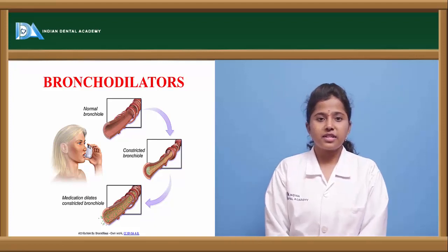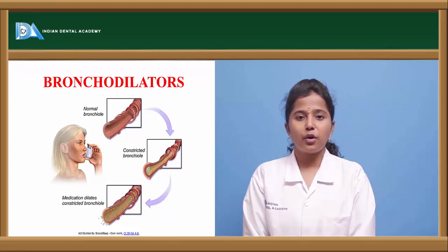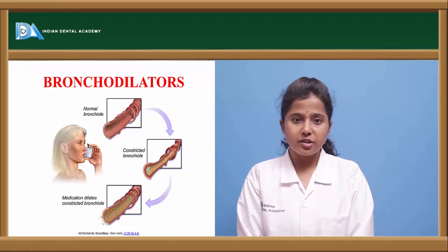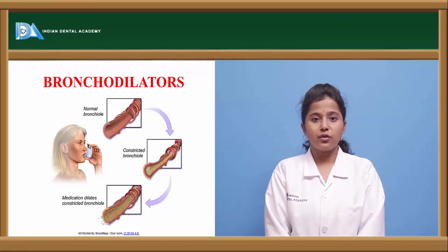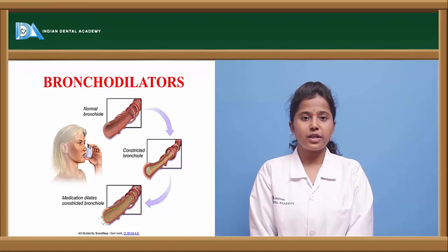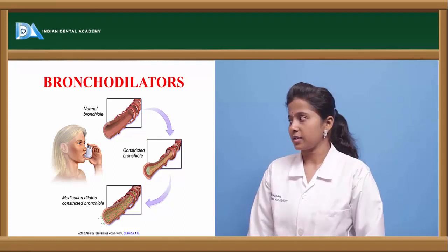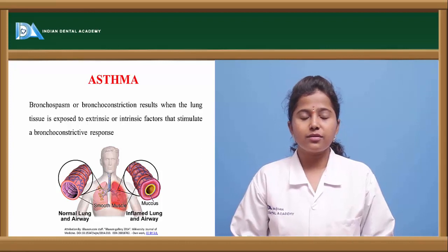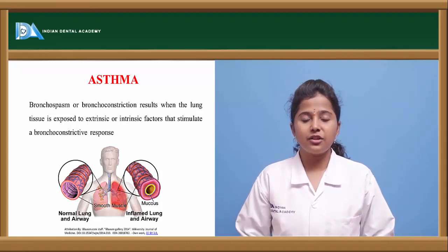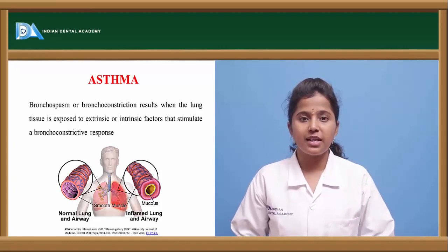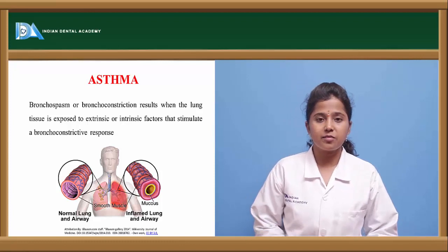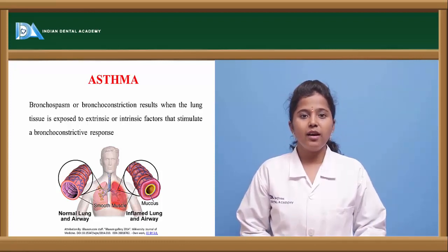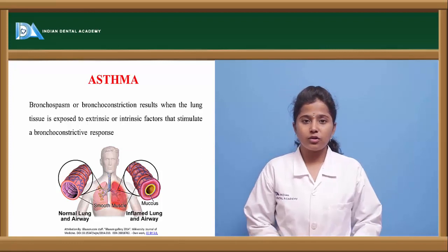The topic which we are going to discuss now are bronchodilators. What are these bronchodilators? Where are these used? And pathophysiology of the disease in which these bronchodilators are used will be discussed. Bronchodilators are the drugs which are used to cause dilation of the bronchial smooth muscle. The name itself indicates bronchodilators — the dilation of bronchial smooth muscle.